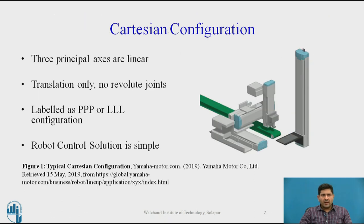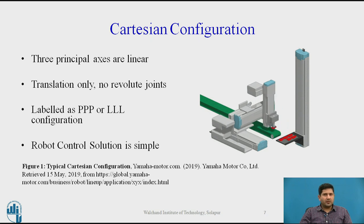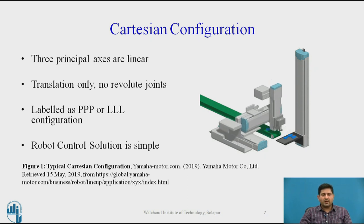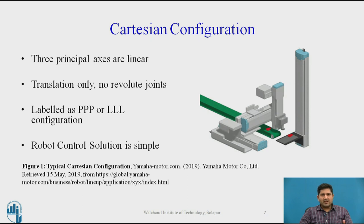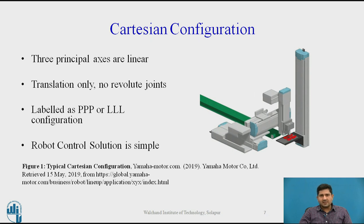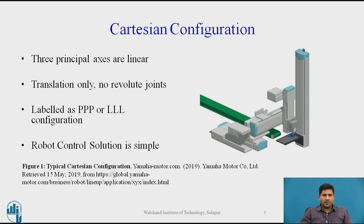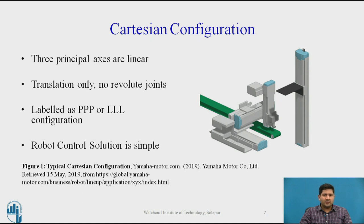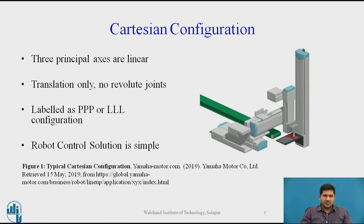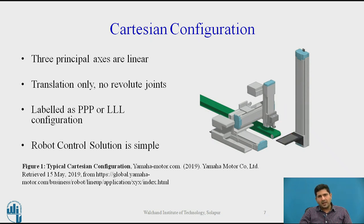Now we'll begin discussing the Cartesian configuration. If you look at the figure to the right, it's a nice animation from Yamaha Motors' website — Yamaha also makes precision equipment and robotics other than automobiles. It shows a very classic Cartesian robot application. You'll notice they are very simple straight linear motions. The principle axes in Cartesian configuration are linear — they have translational motion only, no revolute joints. Hence you'll find them labelled as PPP, where P stands for prismatic — that is prismatic, prismatic, prismatic, or linear, linear, linear. These labels refer to the first three axes; we do not include the end effector axis.